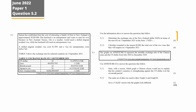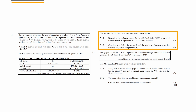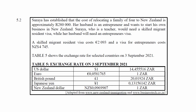Question 5.2 consists of two finance questions designed to assess your understanding of exchange rates. You are given a scenario where it costs 280,000 rand to relocate a family to New Zealand. Two types of work visas are required: a skilled migrant visa costing 2,093 euros for Suraya, and a visa for entrepreneurs costing 4,745 New Zealand dollars for her husband.